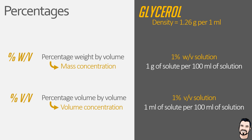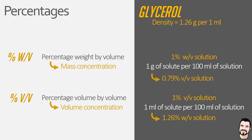Because whilst the solution only contains one millilitre of glycerol, because of its density the solution has 1.26 grams of glycerol present. Therefore a one percent volume per volume solution of glycerol is the same as a 1.26 percent weight per volume solution. And by extension, a one percent weight per volume solution of glycerol contains one gram of glycerol, but because of its density the solution has 0.79 millilitres of glycerol present — therefore a one percent weight per volume solution of glycerol is the same as a 0.79 percent volume per volume solution.